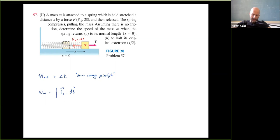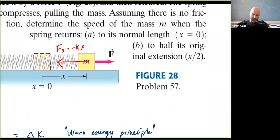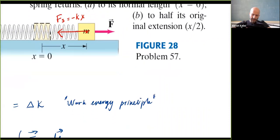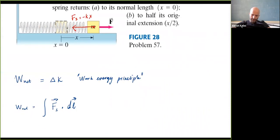So F_s as a vector is -kx î, and dl = dx î. The dot product î · î = 1, so I only need to integrate -kx' dx'. The integral limits: initially x' = x, finally x' = 0. Taking the integral gives -½k x'² evaluated from x to 0.